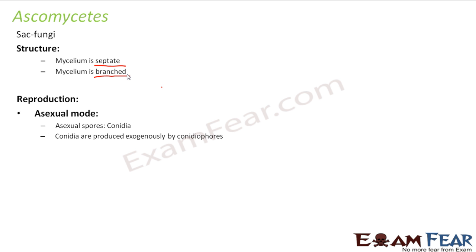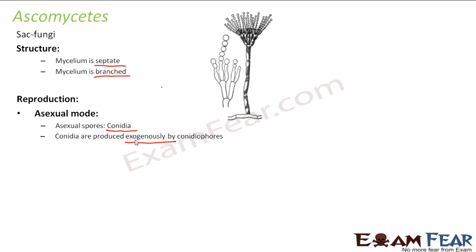For asexual reproduction, ascomycetes produce asexual spores called conidia. Conidia are produced exogenously by conidiophores — exo means exteriorly. Looking at the picture, you can see the conidiophores and the conidia being produced from them. This is how the conidiophores and conidia look under magnification.